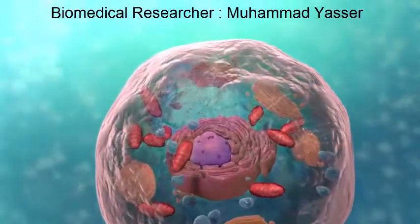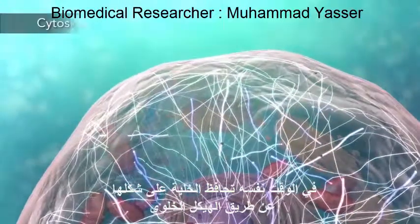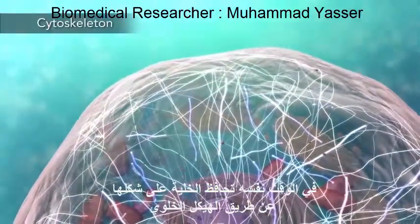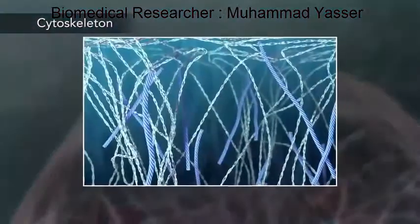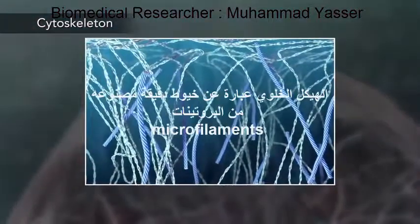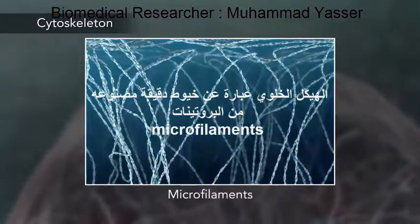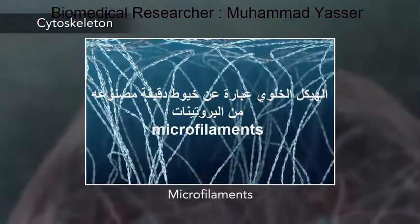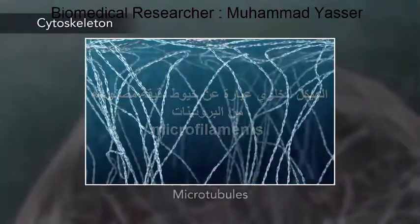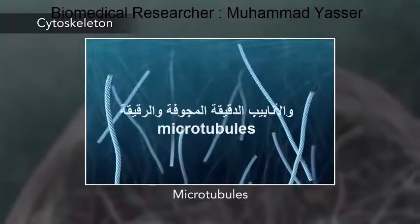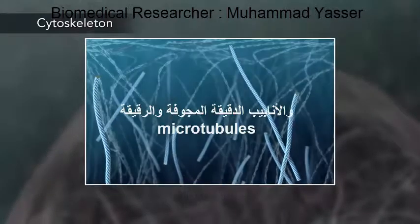Meanwhile, the cell maintains its shape through a cytoskeleton. The cytoskeleton includes the thread-like microfilaments, which are made of protein, and microtubules, which are thin, hollow tubes.